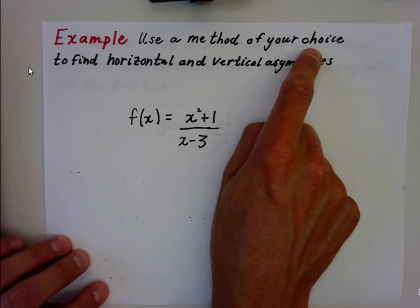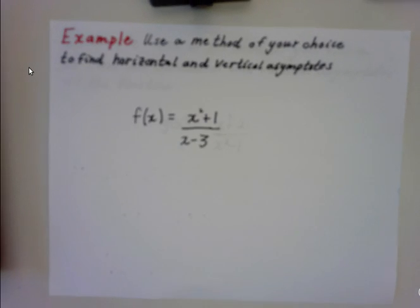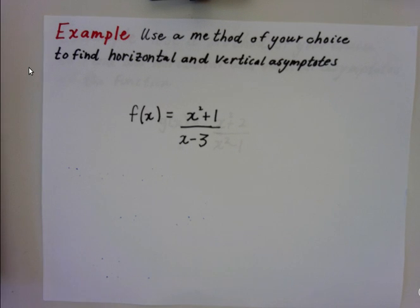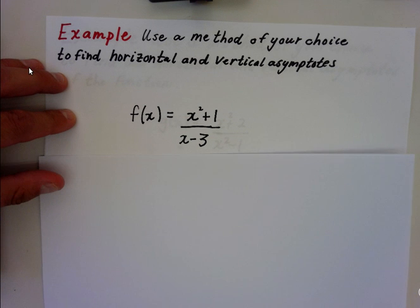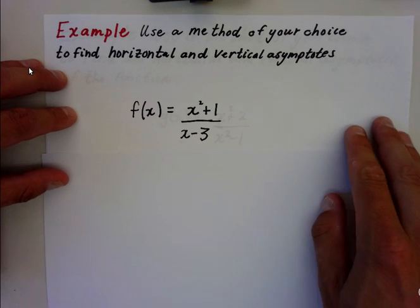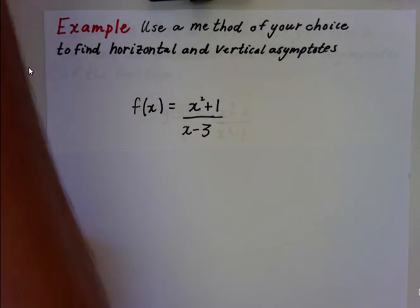Use a method of your choice to find the horizontal and vertical asymptotes. You can do graphing, use a graphical method, or go by hand. I prefer, in this case, to show you by hand. Now, I've got a fraction here.